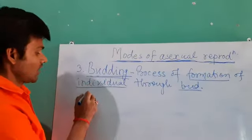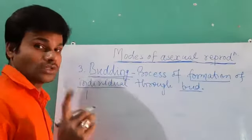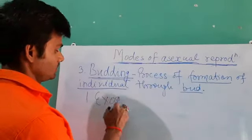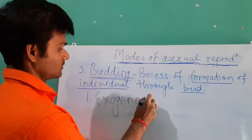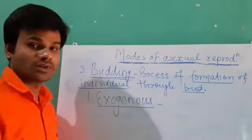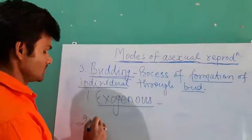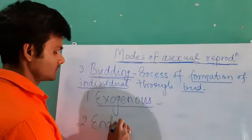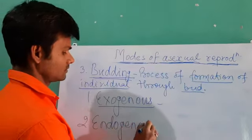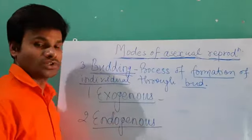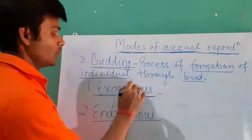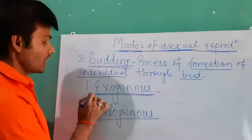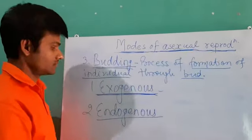Now the types of budding. There are two types of budding. One is exogenous budding. Second is endogenous budding. Now, what is exogenous budding?